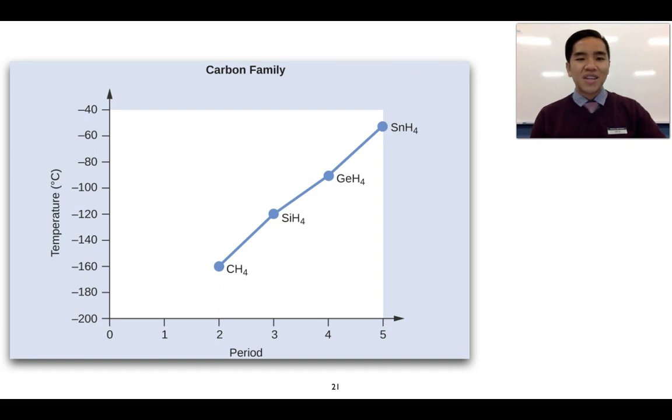We can see evidence of this increase in dispersion forces as the mass increases by looking at one class of compounds. These are what we call the group 4 hydrides, because it's a hydrogen-based compound where the central atom is a group 4 atom, so carbon, silicon, germanium, and tin.